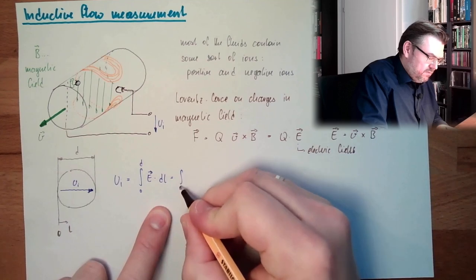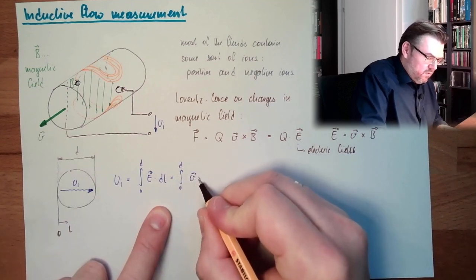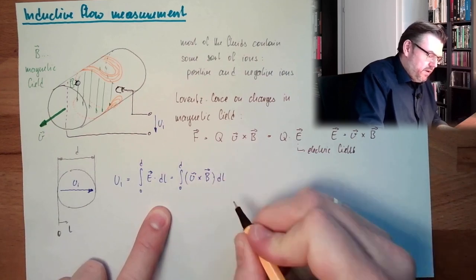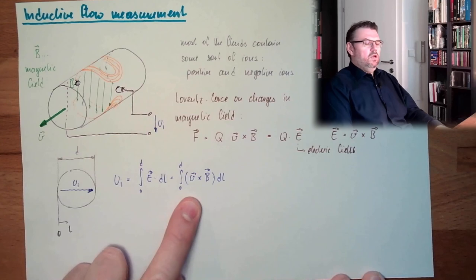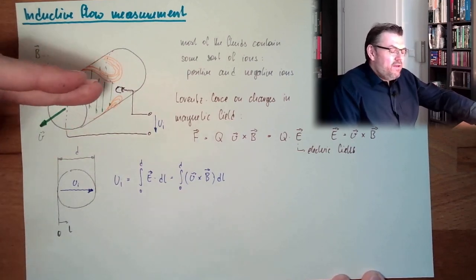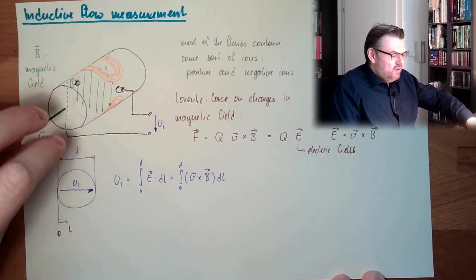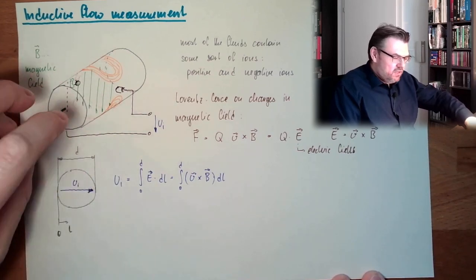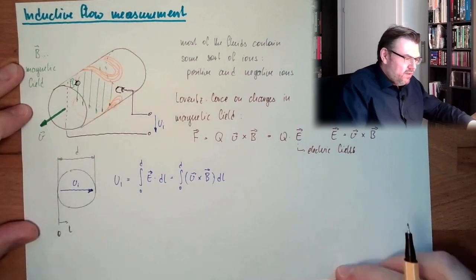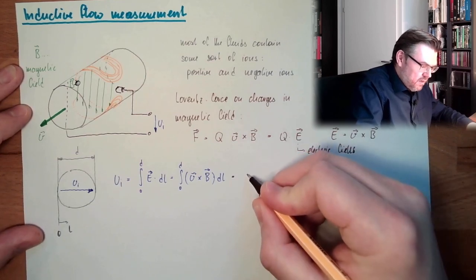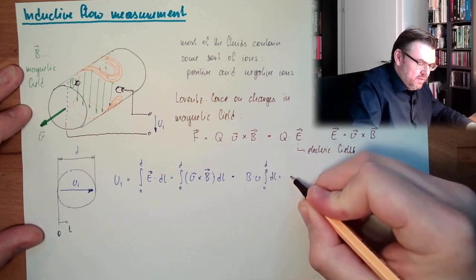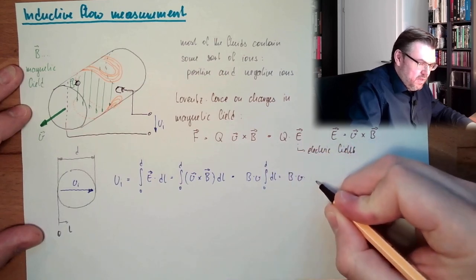So actually this is from zero to d, V cross B multiplied by dl. Let's make a bracket then it's clear. And if this is designed proper, and the velocity, let's say the velocity is a middle velocity, and the B is constant, so we could write this is actually B multiplied by V integral from zero to d dl. And this means B multiplied by V multiplied by d.